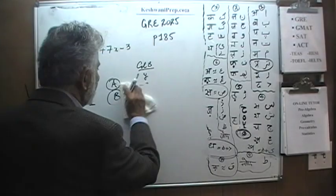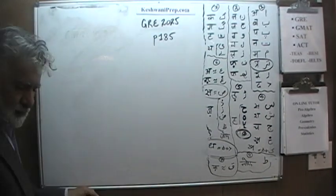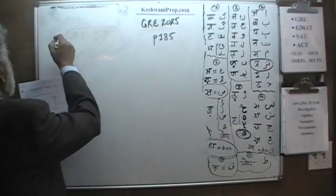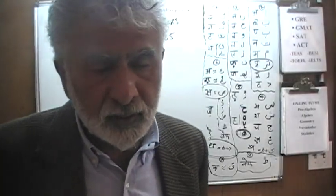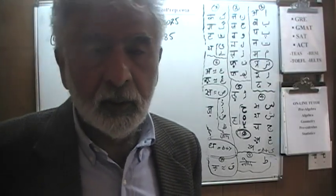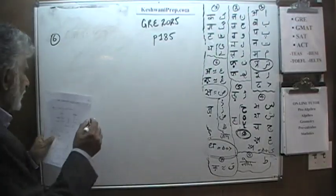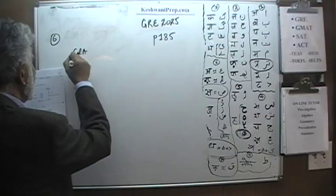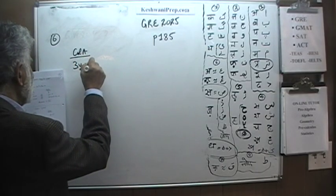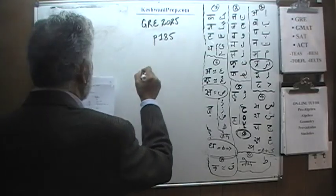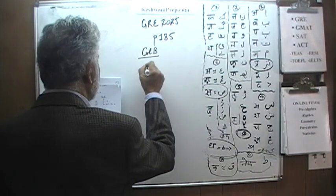Let's do number 6. In some problems it's easier just to plug in numbers; in some problems it's easier to do the algebra. It's a call to make and that comes from experience. For example, the next problem: we have column A where we are told 3y plus 2 over 5, versus column B where we simply have y.